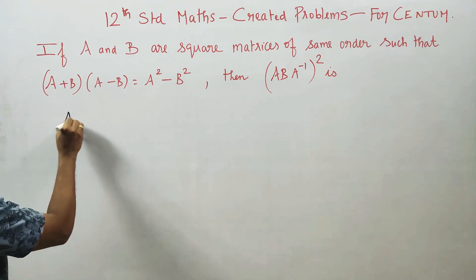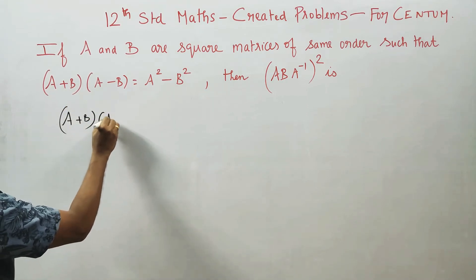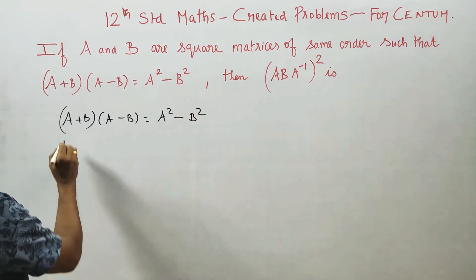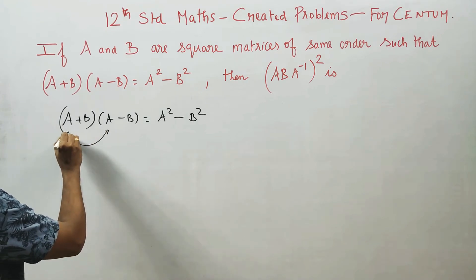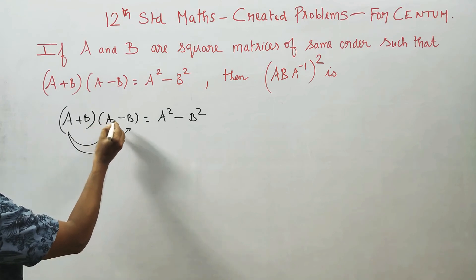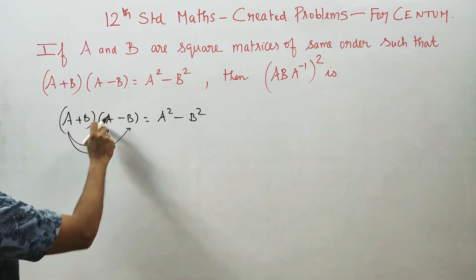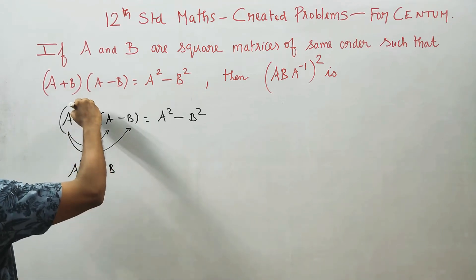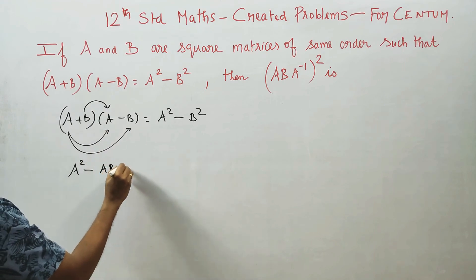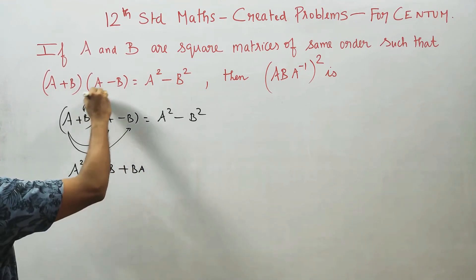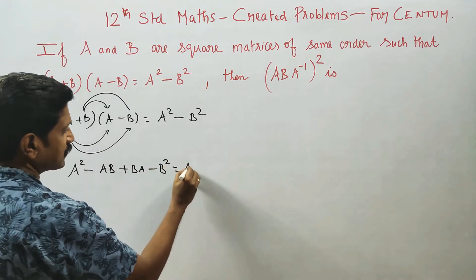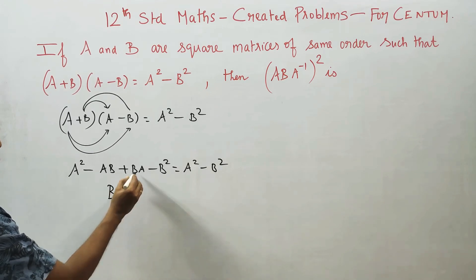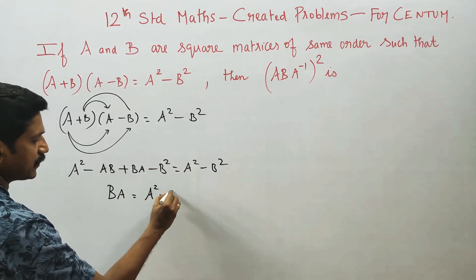It is given that A plus B into A minus B is equal to A square minus B square. First, the matrix expansion gives A square minus B square, which equals A square minus B square.